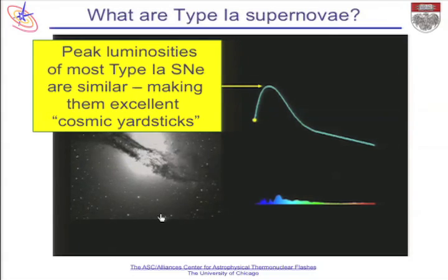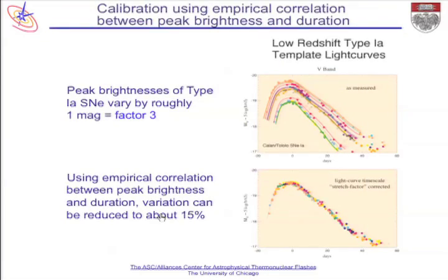Therefore they are good at measuring distances in the universe. If you see one of these events that's only a quarter as bright as another one, you know that one was twice as far away—that's how we use it as a cosmic yardstick. However, the peak luminosities aren't that close; there's a range in their peak brightnesses of more than a factor of three, which is not that good a cosmic yardstick.